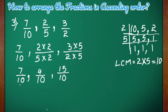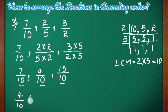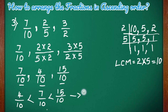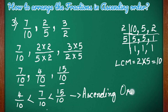Now all the denominators have become the same — they became like fractions. Since the denominators are same, the fraction with the smallest numerator is the smallest. So 4 by 10 is the smallest fraction. Then 7 by 10 comes next, and 15 by 10 is the largest fraction because it has the largest numerator. This is how we can write given unlike fractions in ascending order.